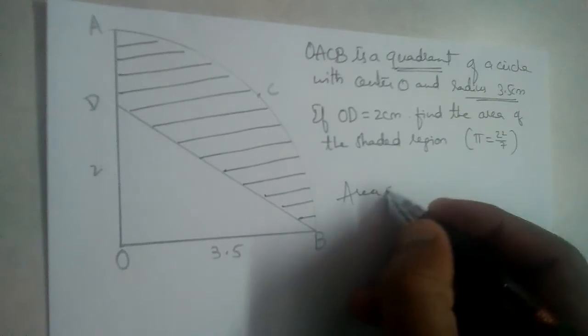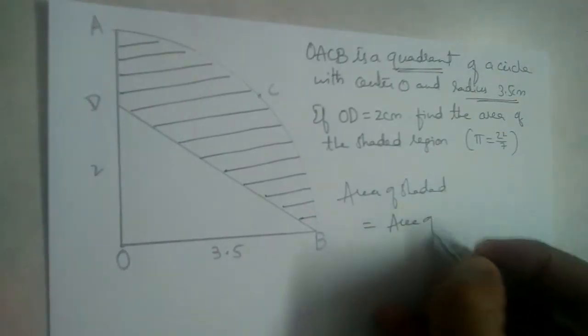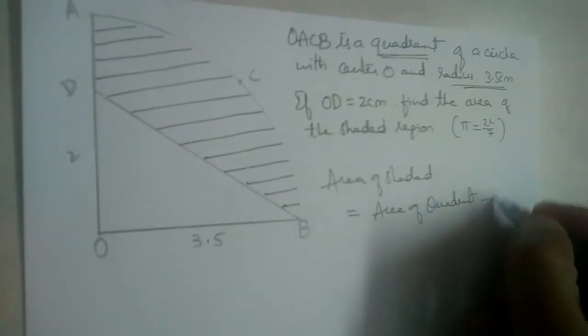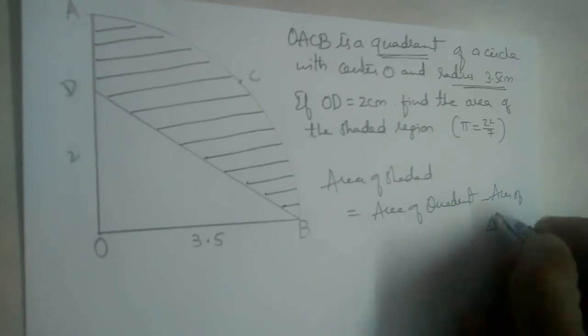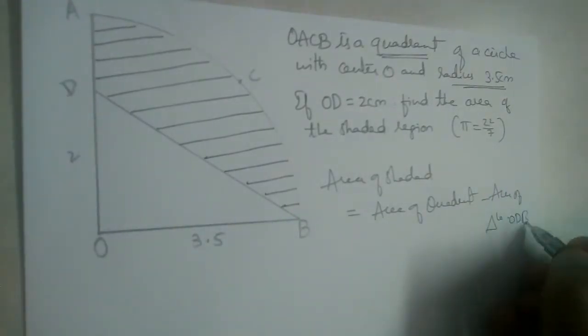So area of shaded region here is equal to area of quadrant, right, one fourth of the circle, minus area of triangle ODB.